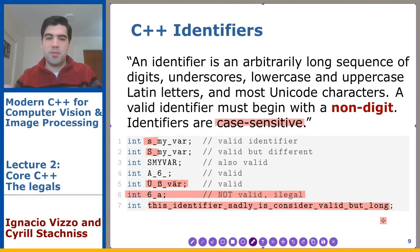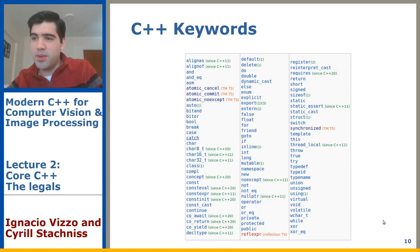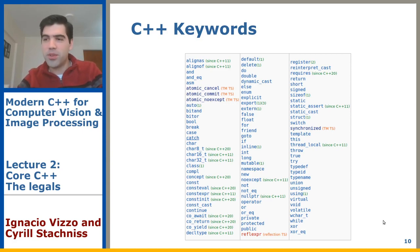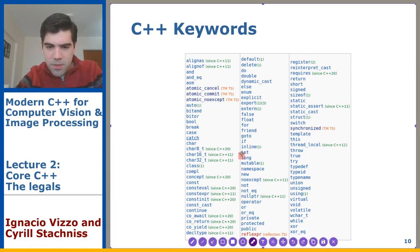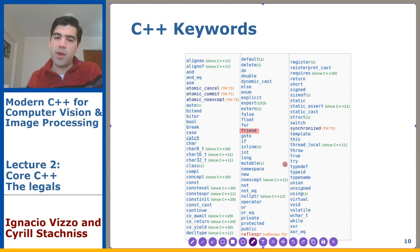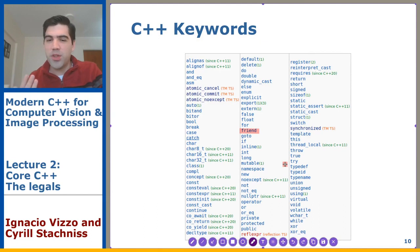Identifiers are case sensitive, so an identifier with a capital S is not the same as one with a lowercase s — they are different entities. Here is the table with the list of keywords in C++. You cannot use these keywords as identifiers — you cannot call a function 'friend', for example, because it's a reserved keyword. You don't own that word and you cannot use it.